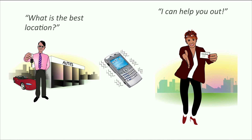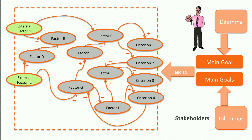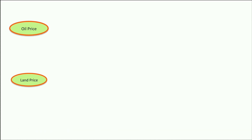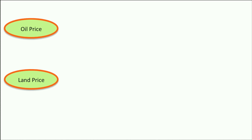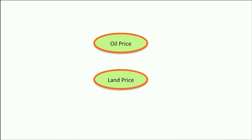I can help you out. To help the car dealer, I will first make a problem diagram. To deal with uncertainty, I take a closer look at the external factors — the factors in the problem diagram which the problem owner is unable to influence. In the case of the car dealer, important external factors are, for example, the oil price and the land prices of empty building plots.